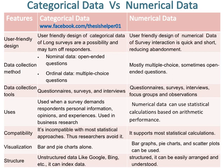Visualization compatibility of categorical data uses bar and pie charts alone, whereas visualization compatibility of numerical data includes bar graphs, pie charts, and scatter plots. The structure of categorical data is unstructured, like data indexed by Google, Bing, etc.